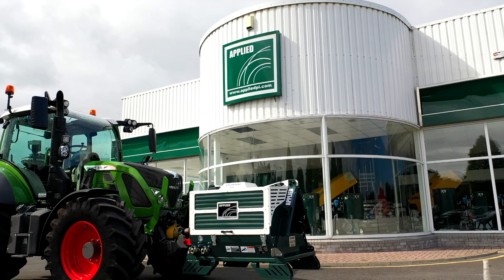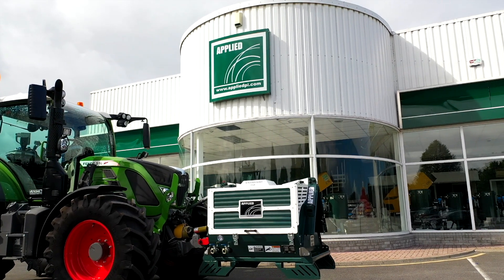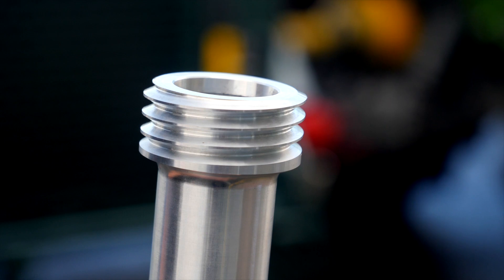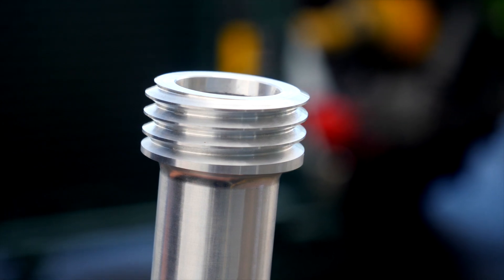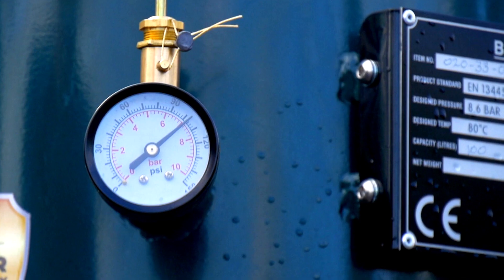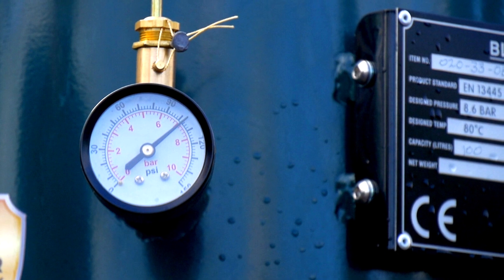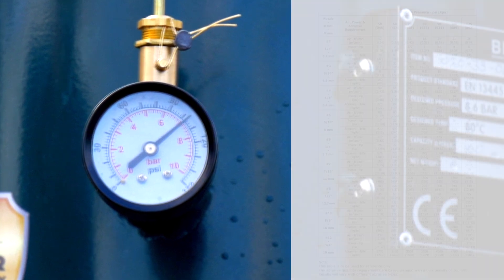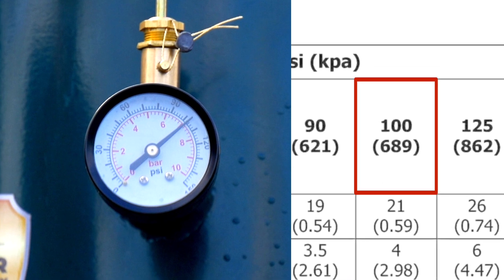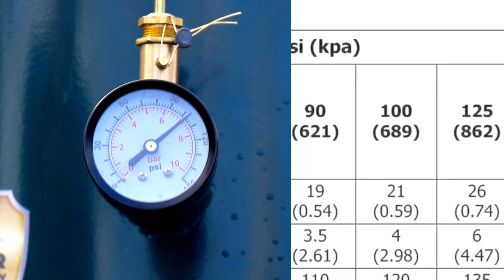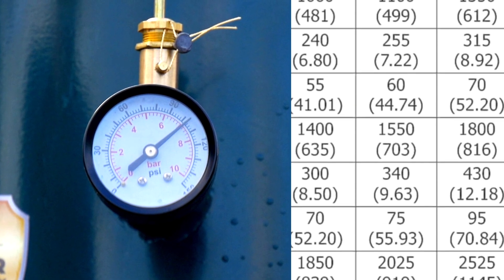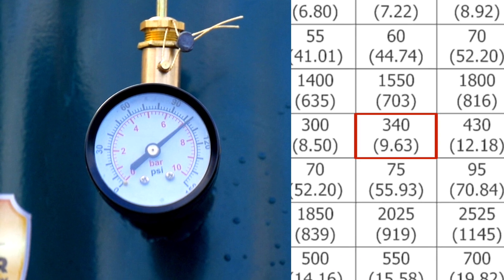First, we will measure the output of an Applied VariMount 350 PTO air compressor using the Applied Blasting machine fitted with the 12.7mm nozzle. As you can see, the pressure received at the blasting machine is 105 psi. Hence, the VariMount is producing over 340 CFM of air.